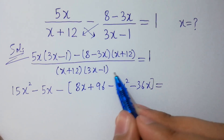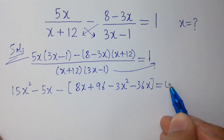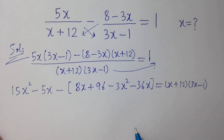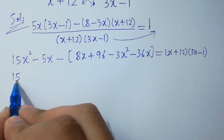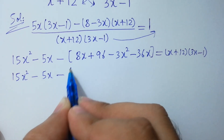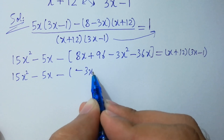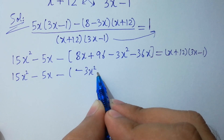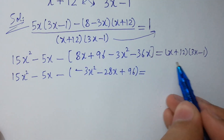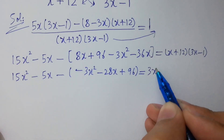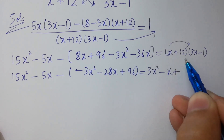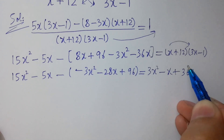We can write (x plus 12)(3x minus 1) on the right side. Next step: 15x squared minus 5x minus 3x squared, then 8x minus 36x equals minus 28x plus 96, equal to 3x squared.